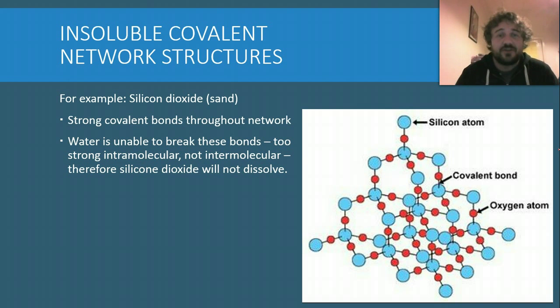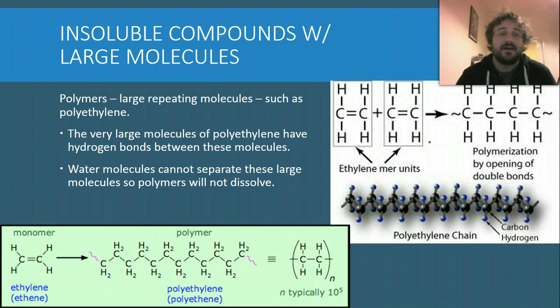Insoluble covalent network structures. Sand. So why doesn't the sand dissolve into the beach? Strong covalent bonds throughout the network. That network just means that's a covalent bond, that's a covalent bond. They're all covalent bonds. It looks like a crystal lattice structure, but they're all covalent bonds. Water can't break these. It's way too strong. So silicon dioxide, it won't dissolve.